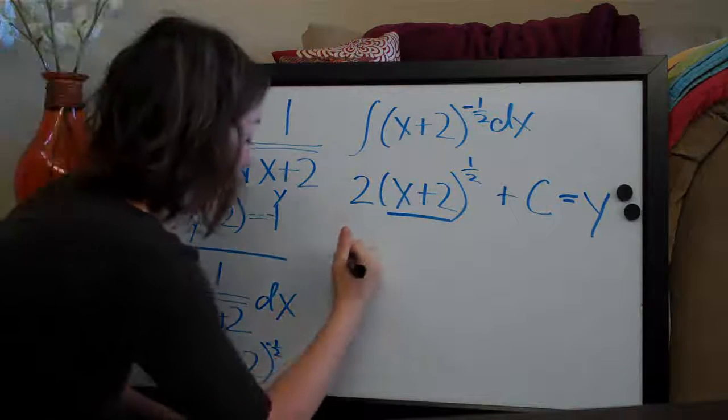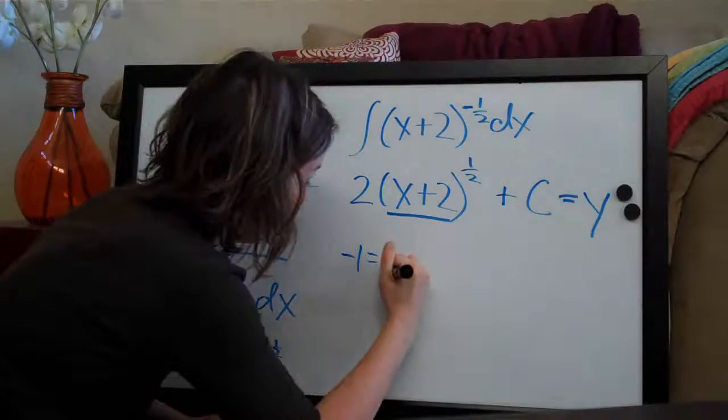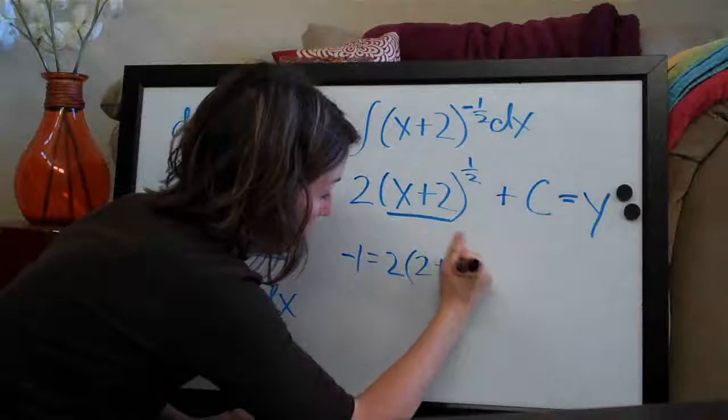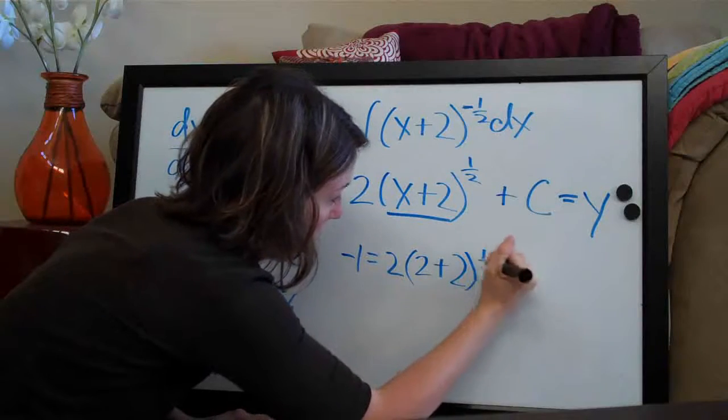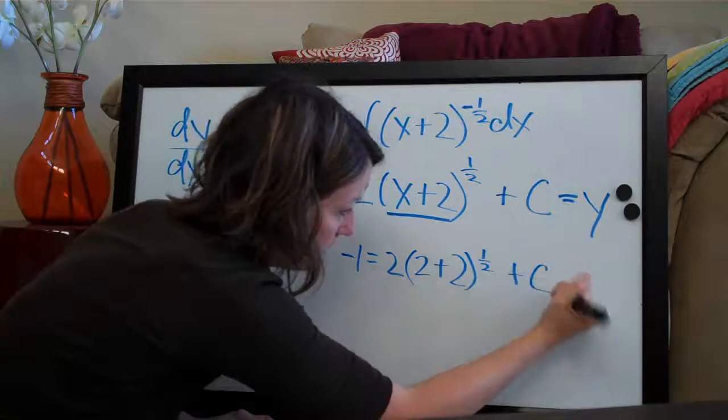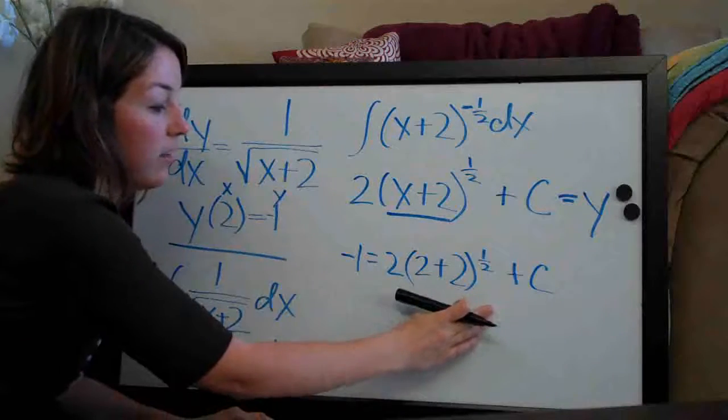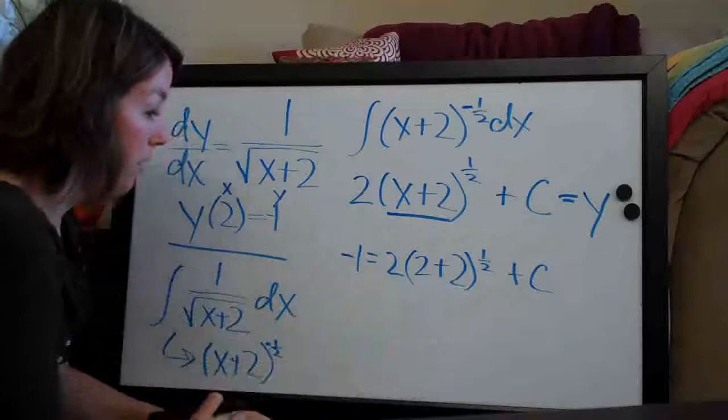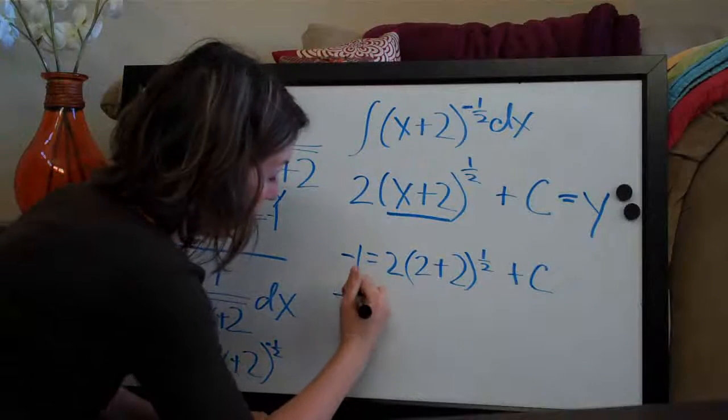So we will have negative 1 equals 2 times 2 plus 2 to the 1 half plus c. And once we plug these things in, what we're going to try to do is solve for c. So we need to simplify so that we can solve for c. So let's go ahead and do that.